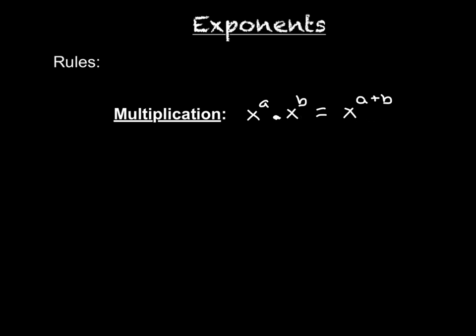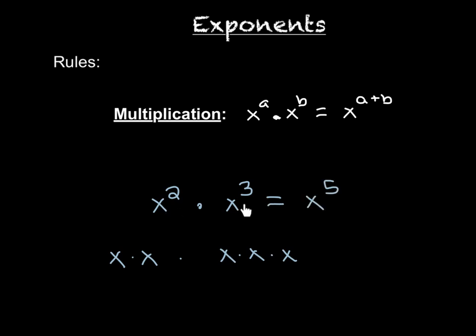For example, let's say we had x squared times x to the third. Well, x squared is the same thing as x times x, and x cubed is the same thing as x times x times x. So if we multiply these together, there's going to be five x's. So we could write that as x to the fifth, which is the same thing as just adding 2 plus 3.